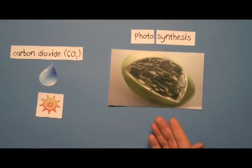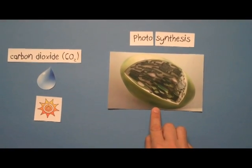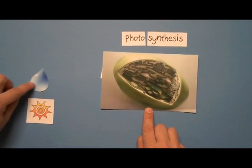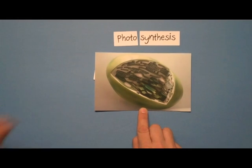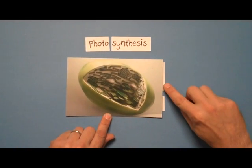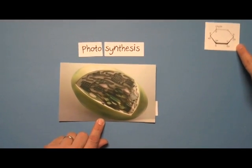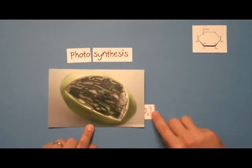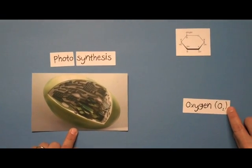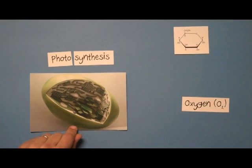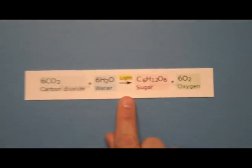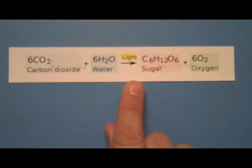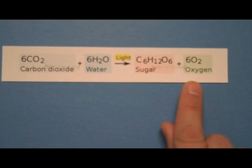So let's review this again. We have the chloroplast, and we input carbon dioxide, water, and light energy from the sun that triggers a chemical reaction. Out of that reaction, we get a sugar called glucose that the plant uses for energy, and then oxygen, which leaves the plant through the leaves. That whole equation looks something like this: carbon dioxide and water go in, light triggers the reaction, and it makes glucose and oxygen.